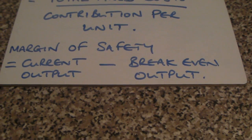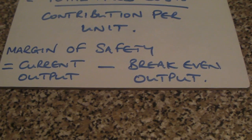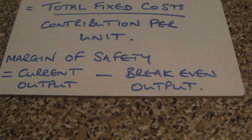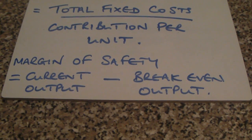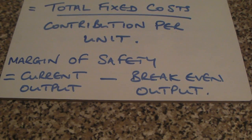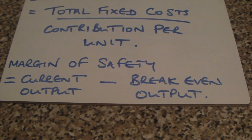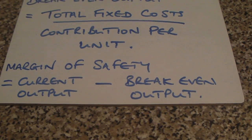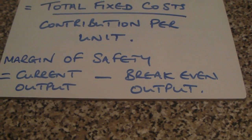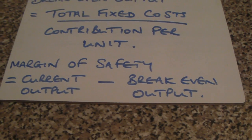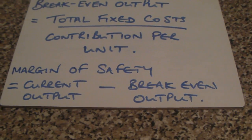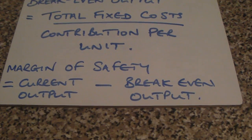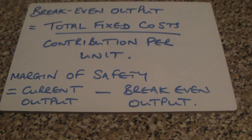Our margin of safety is the difference between our current or forecasted output and our breakeven output. Anything above our breakeven output acts as a safety net — a cushion. Our output can fall by that amount before it drops below breakeven, at which point the business would start to make a loss. That's why we call it the margin of safety: it's the buffer between what you need to break even and the extra amount you are currently or forecasting to make and sell.